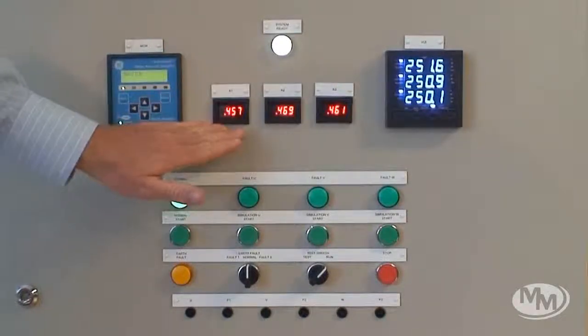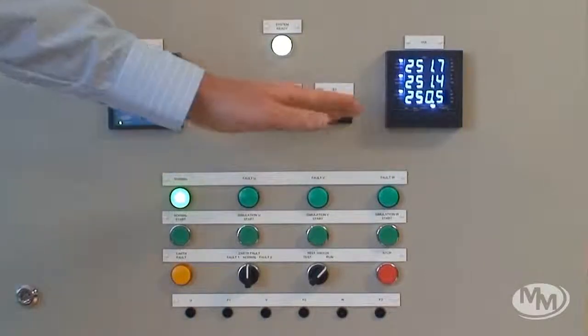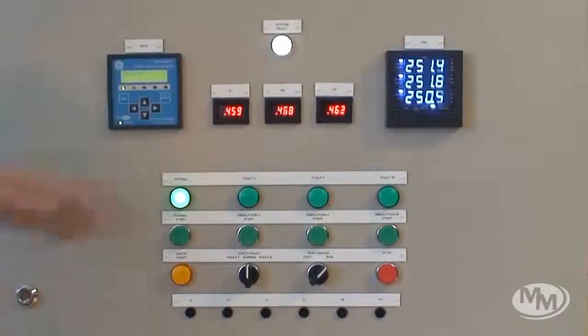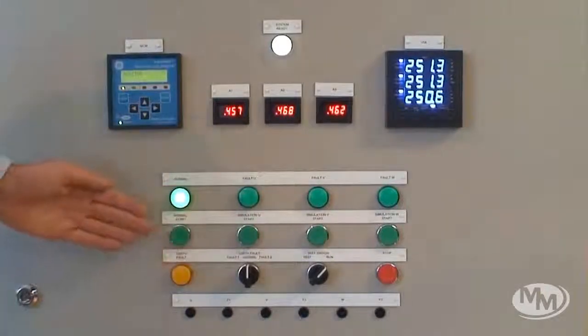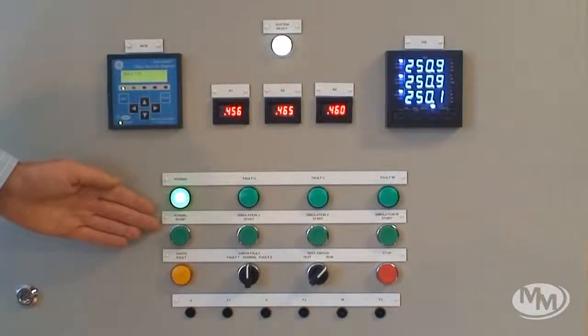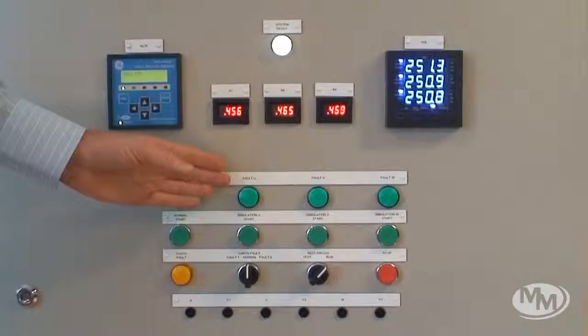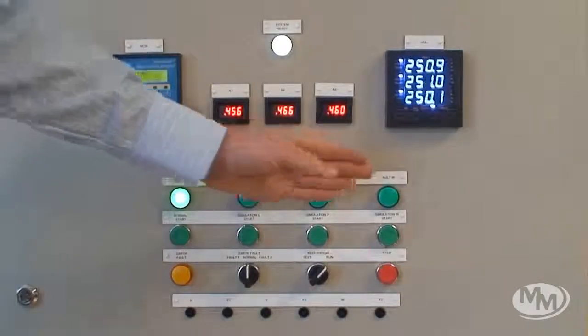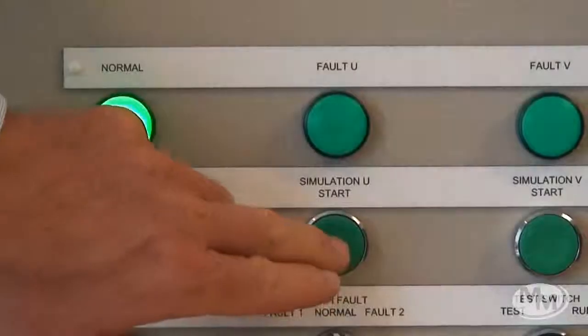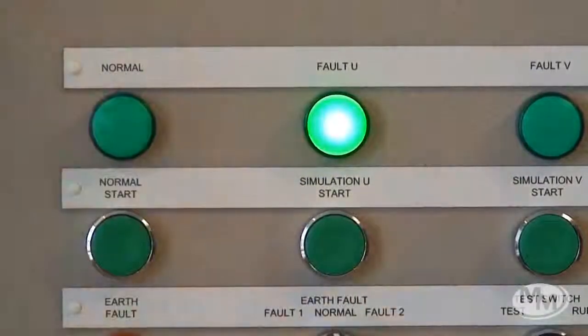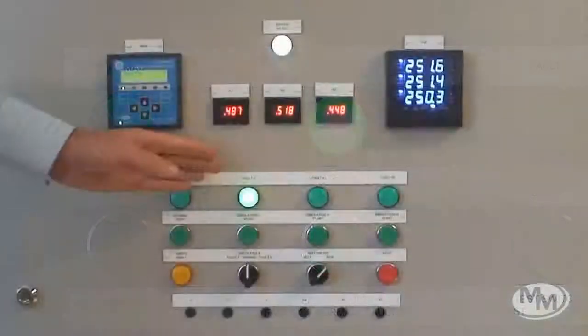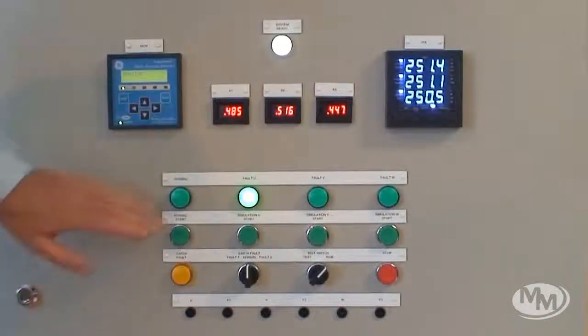We can see here there is current per phase and also phase voltages. Along here are the push buttons for introducing electrical faults. We can introduce a turn fault on either U, V or W phase simply by pushing the simulation start button on the corresponding phase. Resetting is as simple as pushing the normal state push button.